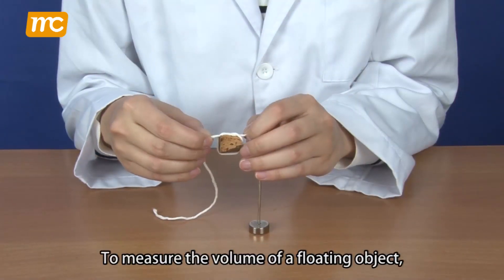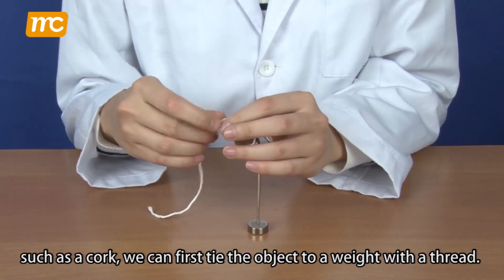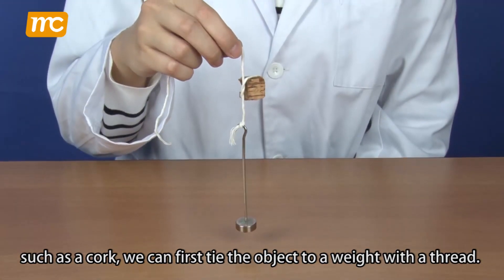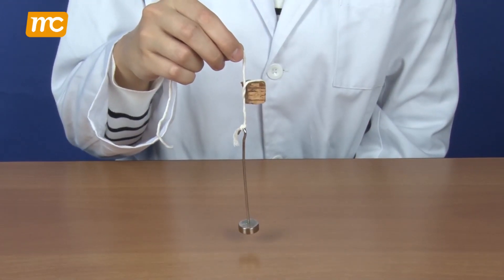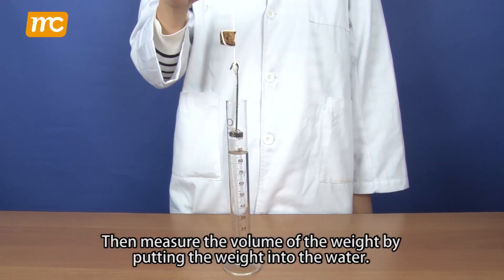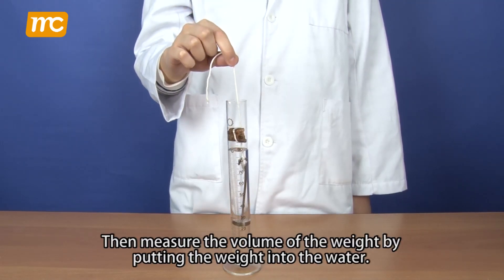To measure the volume of a floating object, such as a cork, we can first tie the object to a weight with a thread. Then measure the volume of the weight by putting the weight into the water.